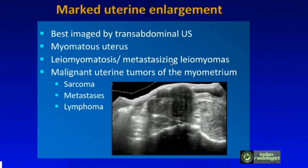Technical tips: for larger uteri, image with transabdominal ultrasound. Even when a script calls for transvaginal only, I always insist on getting some transabdominal images to better appreciate the extent of the lesion. If you see a very large uterus, consider the differential: myoma, leiomyomatosis or metastasizing leiomyoma, or malignant tumors of the myometrium — which are rare but can include sarcoma, metastasis, and very rarely lymphoma.